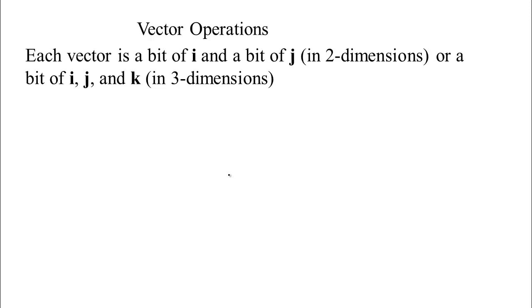All right, so we can sum up how to do vector operations if we just have a list of numbers, or we have components in the i, j, or in the i, j, and k directions. First, think about every vector. If you're in two dimensions, every vector is a certain amount of i with a certain amount of j, or it's a certain amount of i, a certain amount of j, and a certain amount of k, if you're talking about a vector in three dimensions.